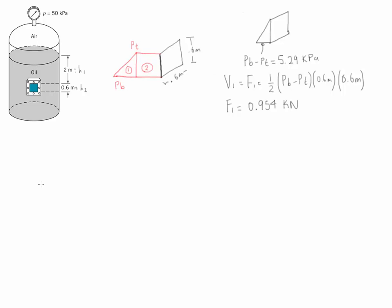Let's now calculate section number two, which is a box. We simply have the cross-sectional area as a rectangle with length pt. Note that for both cases the cross-sectional area used must be exactly the same — in this case it is 0.6 times 0.6 meters.